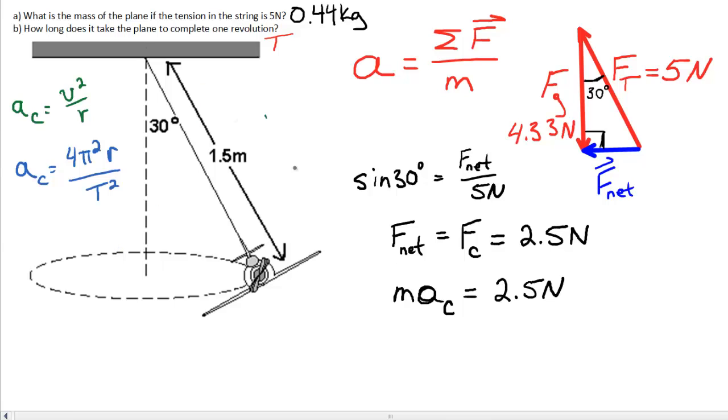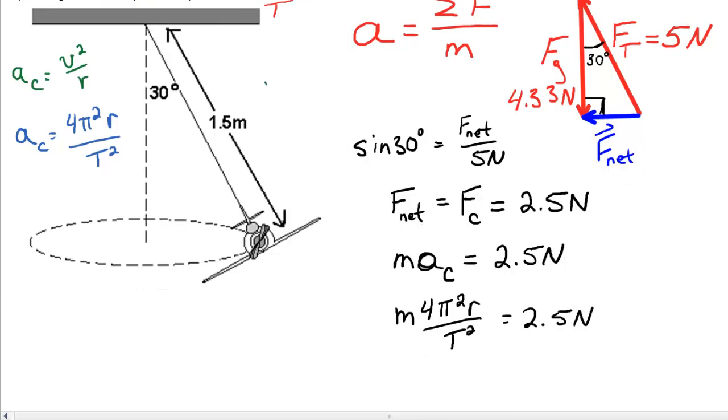So my formula simply looks like this. Mass times 4 pi squared r over T squared is equal to 2.5 newtons. And I'm just going to rearrange this formula and solve it for T squared. So moving the thing down a little bit so we can see what we're doing, I end up with T squared as follows.